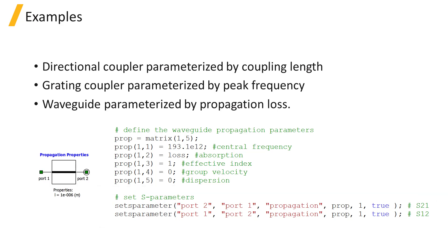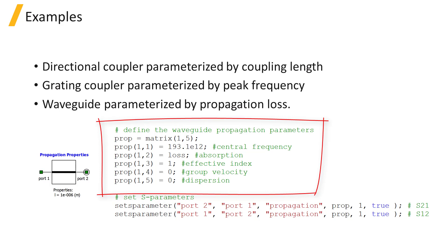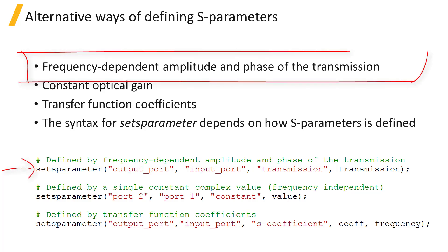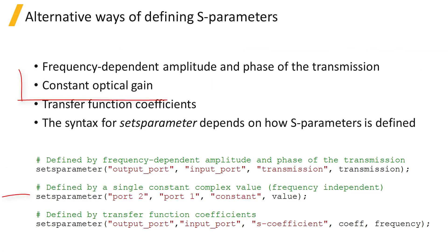There are different options for how to define the S-parameters when using the set S-parameter command. Here, we specify the waveguide propagation parameters including absorption, effective index, group velocity, dispersion, and length. But you could also define the S-parameters by providing the frequency dependent amplitude and phase of the transmission, or a constant optical gain, or by defining transfer function coefficients.